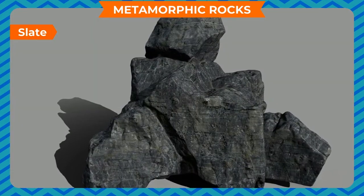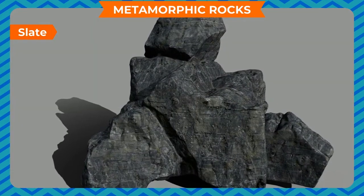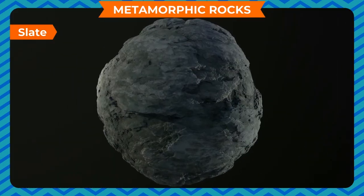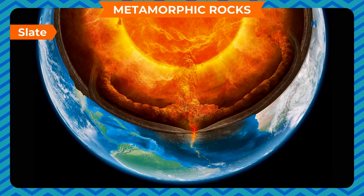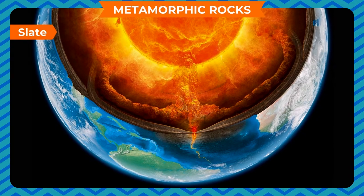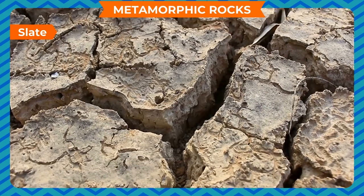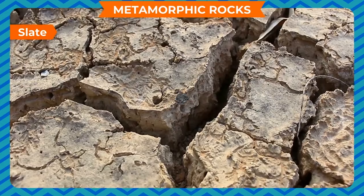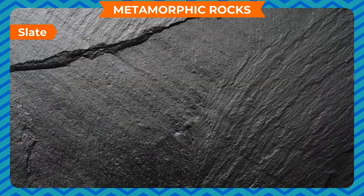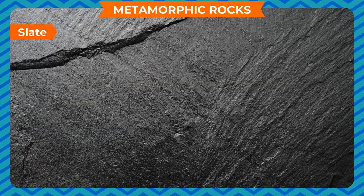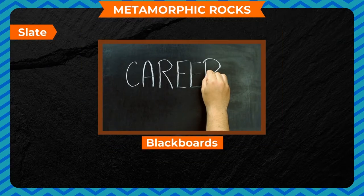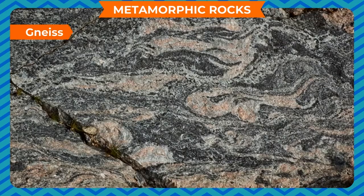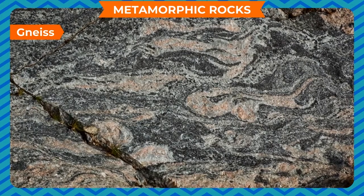Slate is a metamorphic rock formed from shale. When shale is buried deep inside the Earth's crust and exposed to high heat and pressure, the clay changes into new minerals and the shale converts into slate. It is formed in thin layers and is widely used to make blackboards, bricks, and slates.